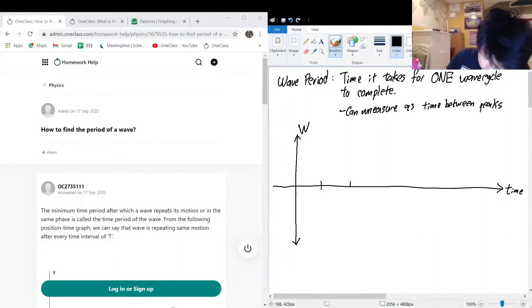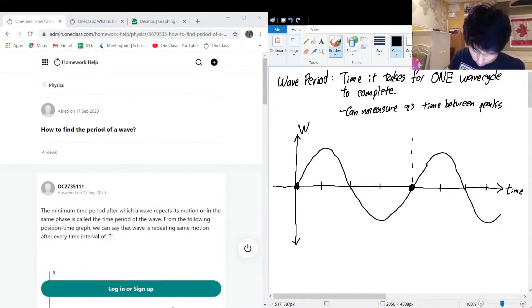Suppose that we have maybe a sinusoidal looking wave with something like this, and of course it's going to repeat and repeat. So what you could do here is you see this would be one wave cycle. This could be t2 and this could be t1. Period T could be equal to t2 minus t1.